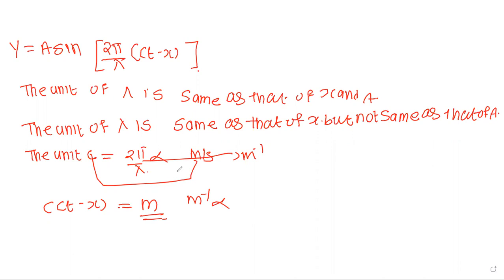So we're left with the first or second option. A student says the second option. The reason: lambda and x are both measurements of distance so they share the same unit. A is the amplitude — associated with the sine function — so its unit could potentially differ.